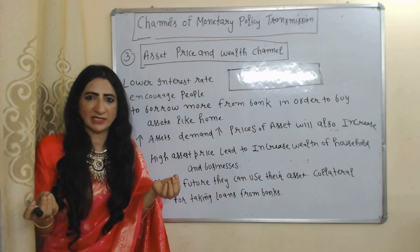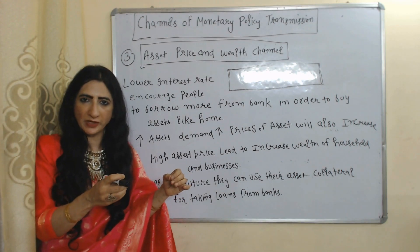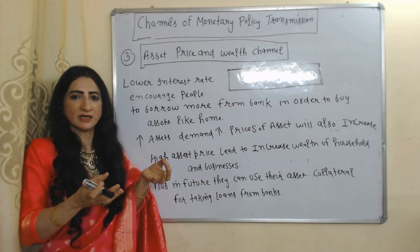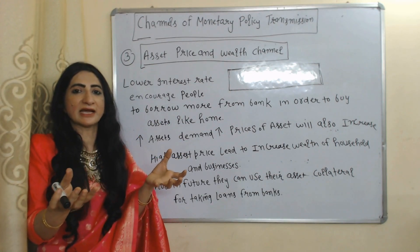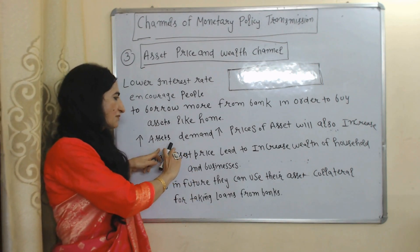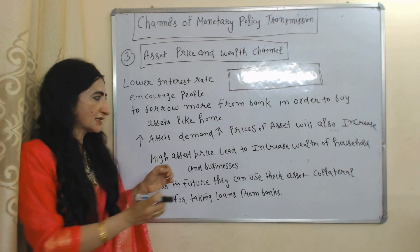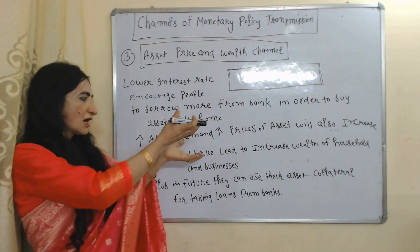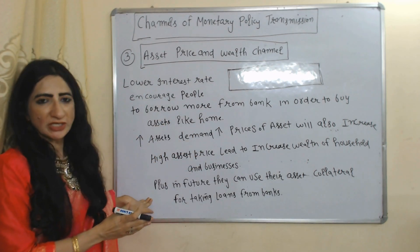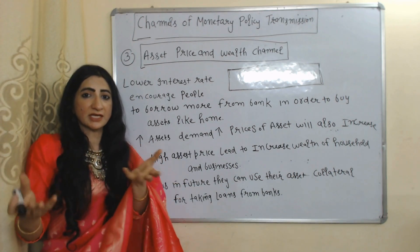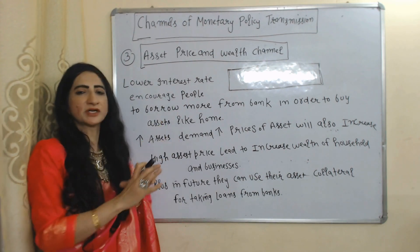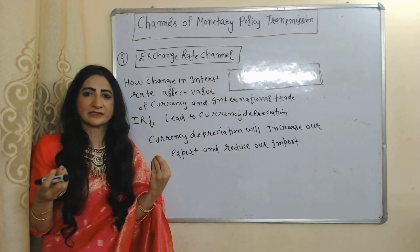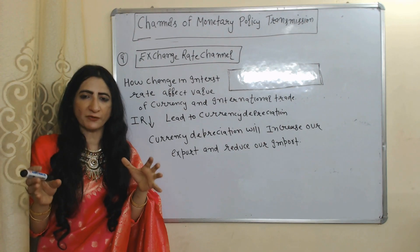The next channel is the asset price and wealth channel — monetary policy influences the prices of assets and wealth of individuals. Suppose through monetary policy the central bank reduces interest rate, and lower interest rate encourages people to borrow more money from banks to buy their assets like a home. As demand for assets increases, prices of assets will also increase, and high asset prices lead to an increase in wealth of both households and businesses. They can also use their assets as collateral for taking loans from banks.